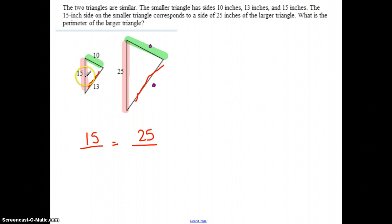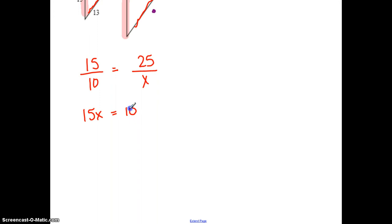Let's say that I want to do this one. Let's call it X. That means 10 would have to pair up with the X. If I cross multiply, 15X equals 10 times 25, which is 250. Divide by 15, which reduces down to 50 over 3, which is 16 and two-thirds. So this side right here is 16 and two-thirds.